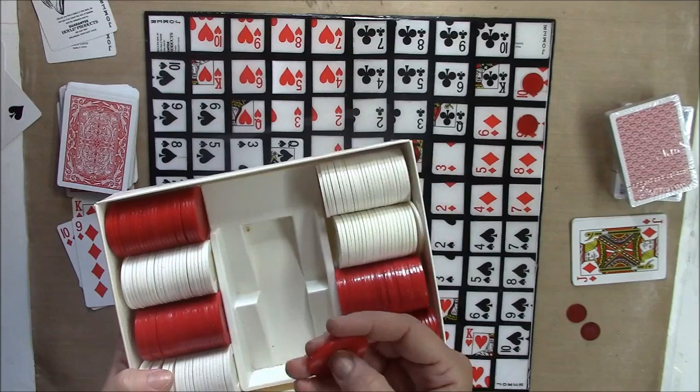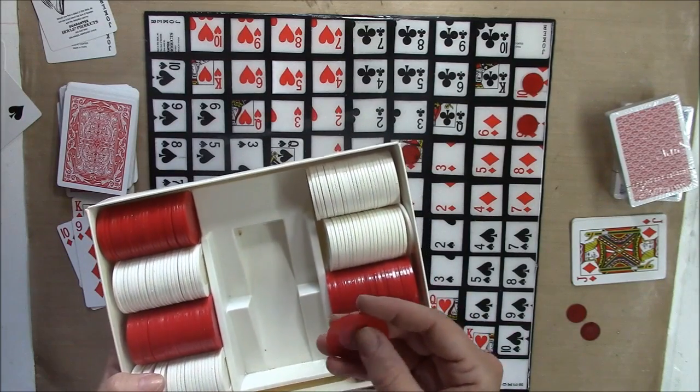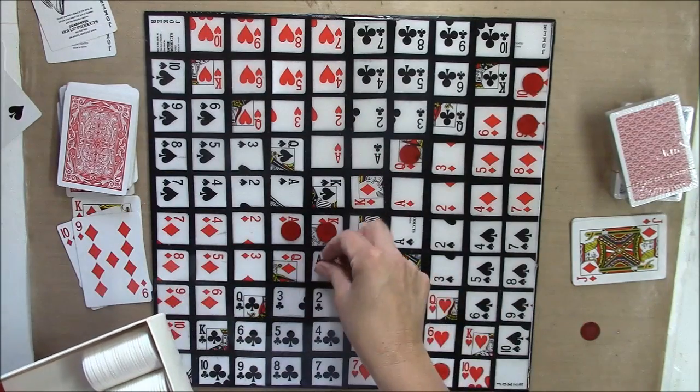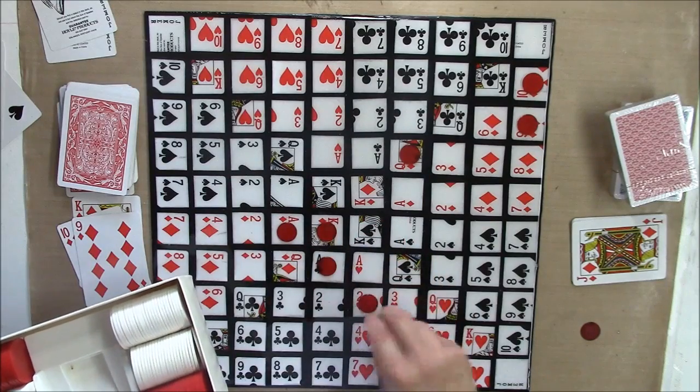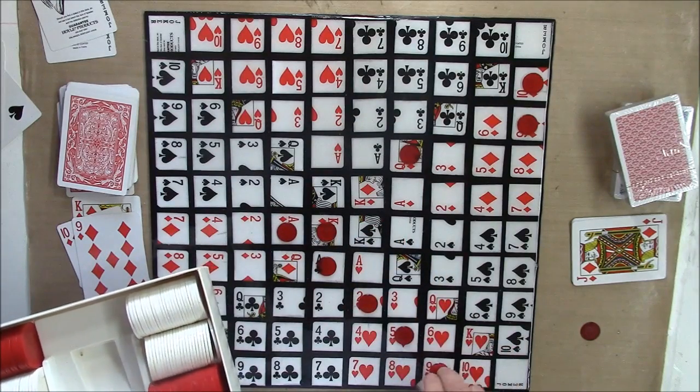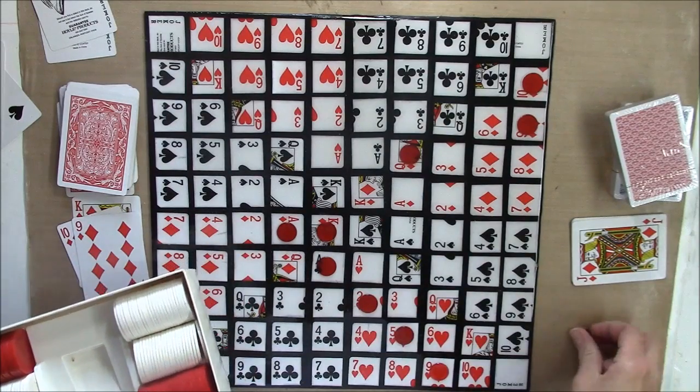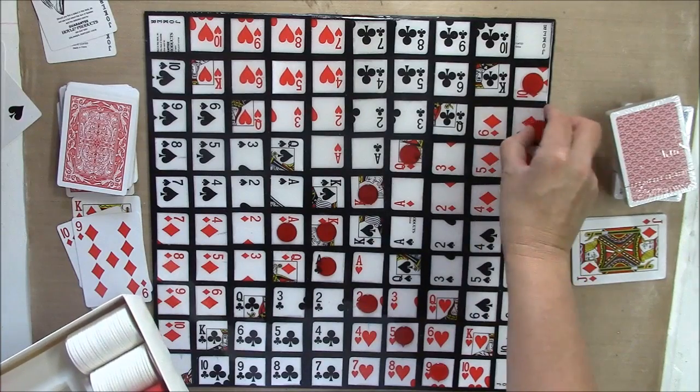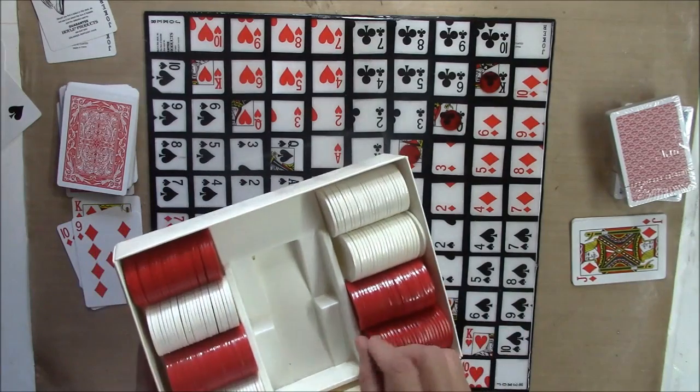...because once you've got five in a row, you want to flip your chips over to where that mark is, so that shows one win. So, basically, you're going to get two wins, if you get two lines in one game, then your team wins, or you win.